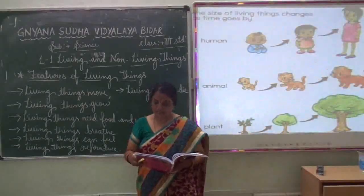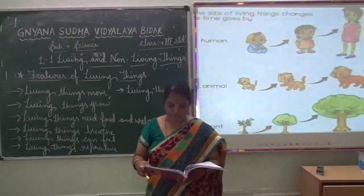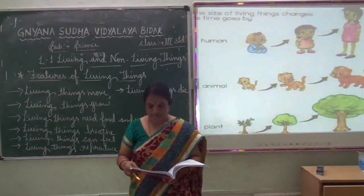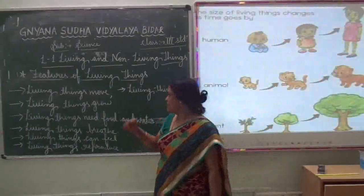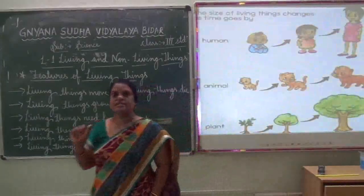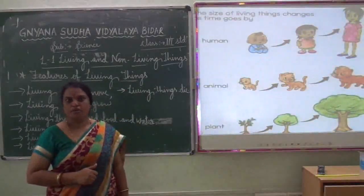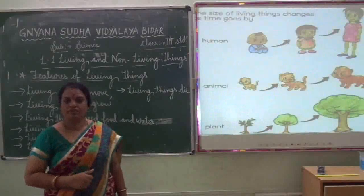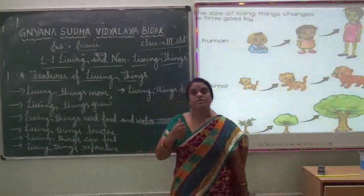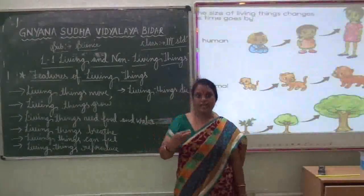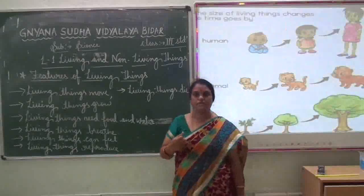Animals get their food from plants or other animals. A deer eats plants for its food. A lion needs animals like the deer to stay alive. We cannot live without food and water because food gives us energy to grow. Food helps us to grow.